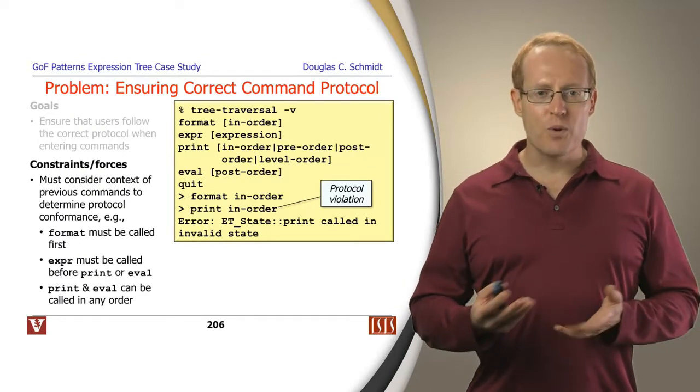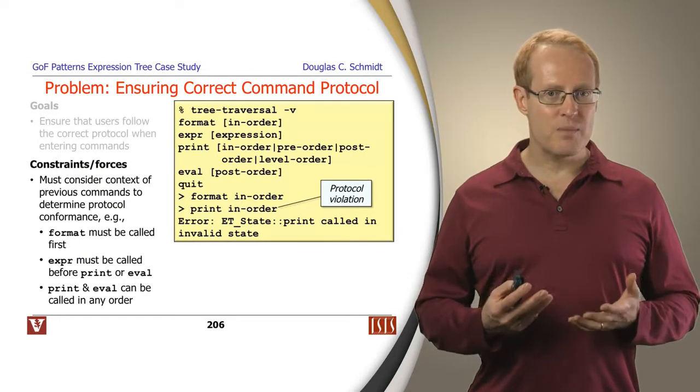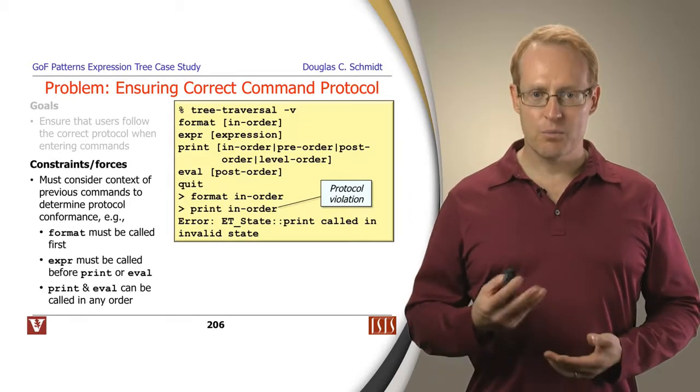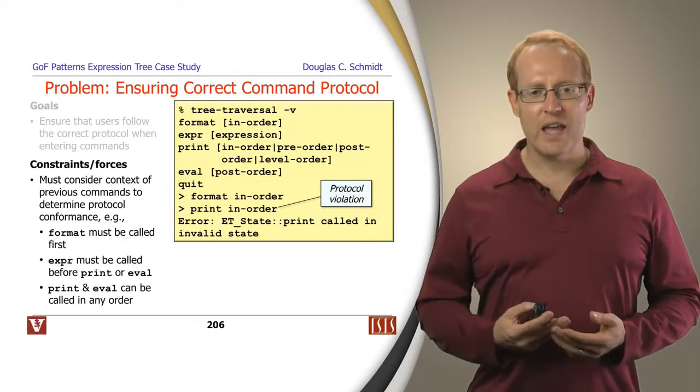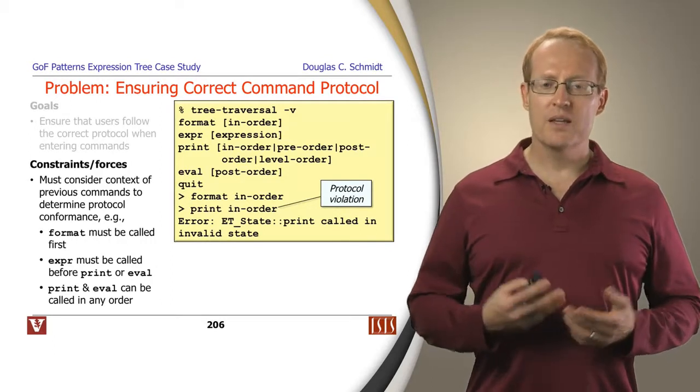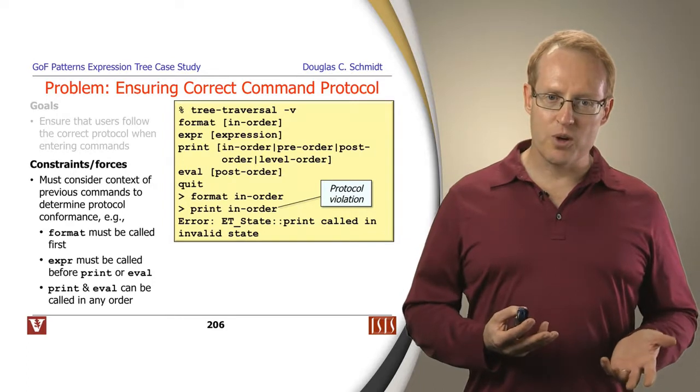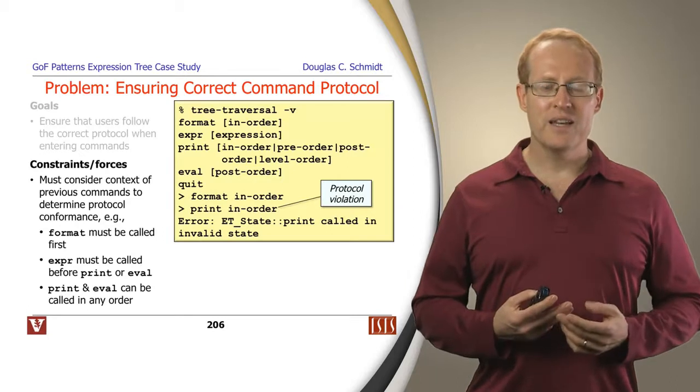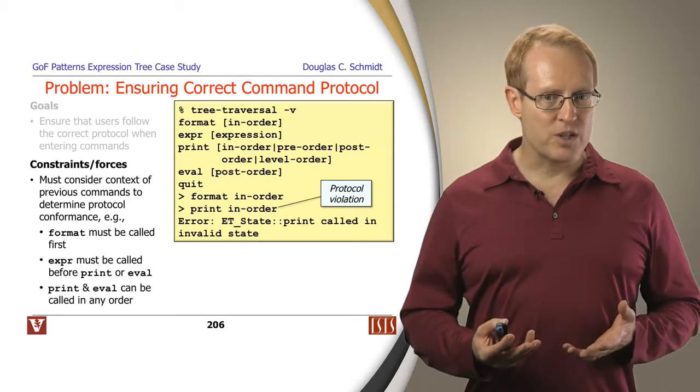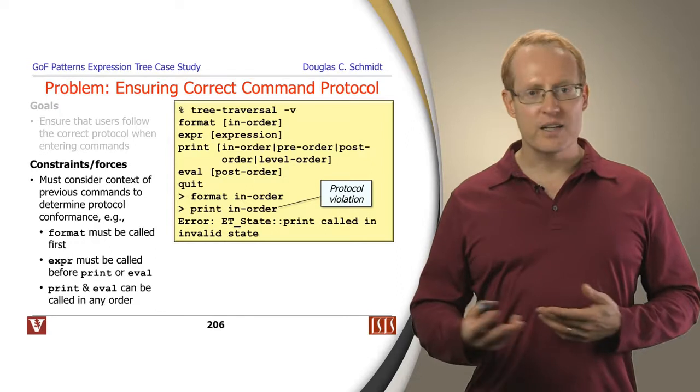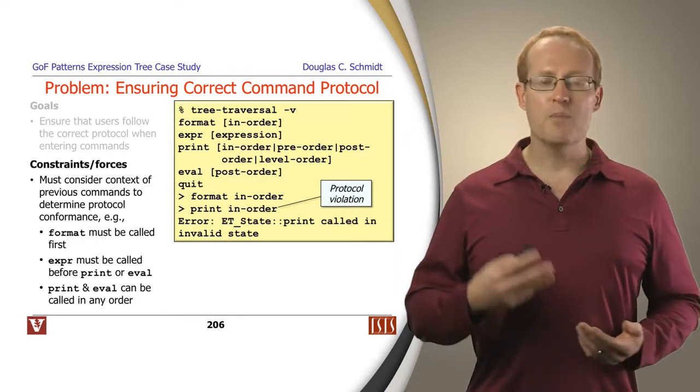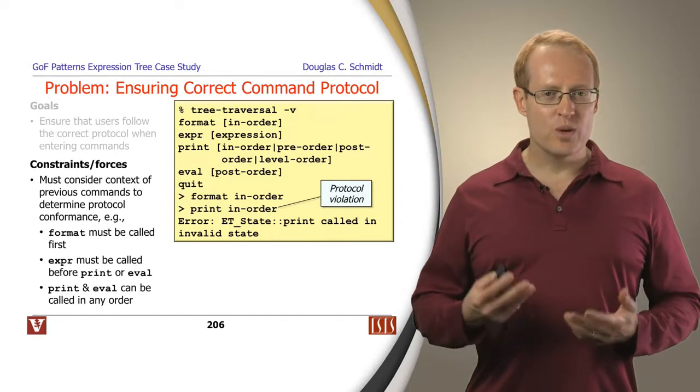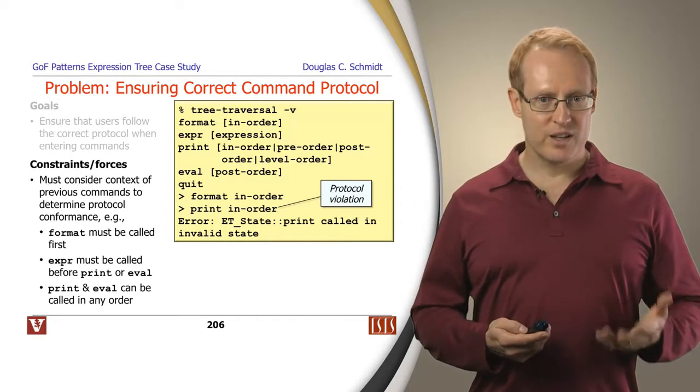Because we can't do a print until we've actually given an expression to be built into an expression tree. So the constraints and forces here is that we can't run these commands in just any order. We have to run the commands in an order that obeys the protocol. In this particular case, format must be the first thing to be called. The expression or expr command must be given before print or eval is called, but after format.